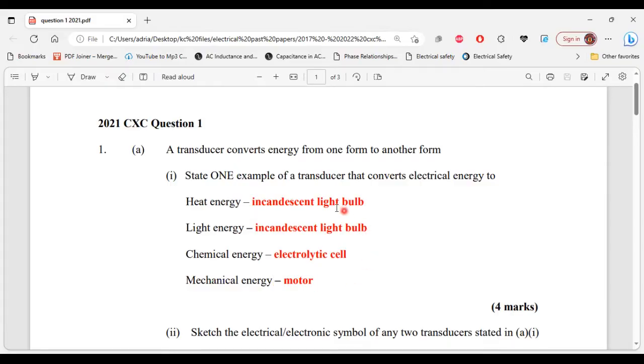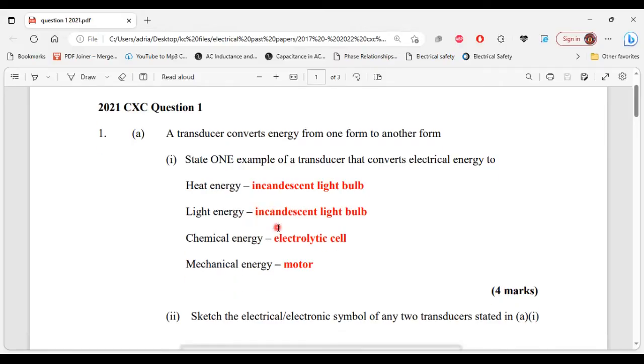These are all the different types of transducers that can be used to convert electrical energy to the different forms of energies that are listed here. That's it for part 1 of A. Let's move on to part 2.